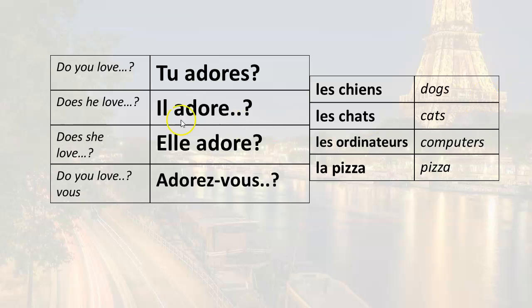Does he love? Does she love? — Elle adore les chiens? Does she love cats? — Elle adore les chats? Does she love pizza? — Elle adore la pizza? Does she love computers? — Elle adore les ordinateurs?